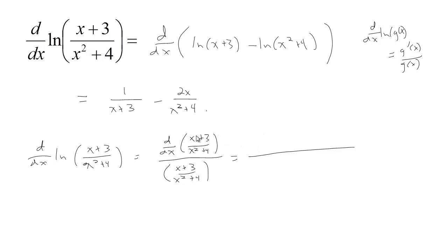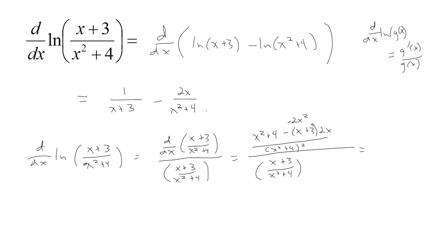Let's go ahead and use the quotient rule to find this derivative. We take the derivative of the top, which is 1 times the bottom, so you get 1 times x squared plus 4, minus the top, which is x plus 3 times the derivative of the bottom, which is 2x, all over the bottom squared, so we get x squared plus 4 squared. And then this is all over x plus 3 over x squared plus 4. Distributing that 2x, we have minus 2x squared and minus 6x, so we get minus x squared minus 6x plus 4 on top, over x squared plus 4 squared, all over x plus 3 over x squared plus 4.